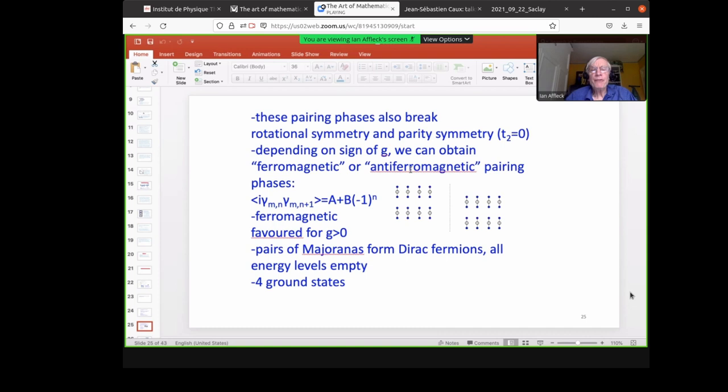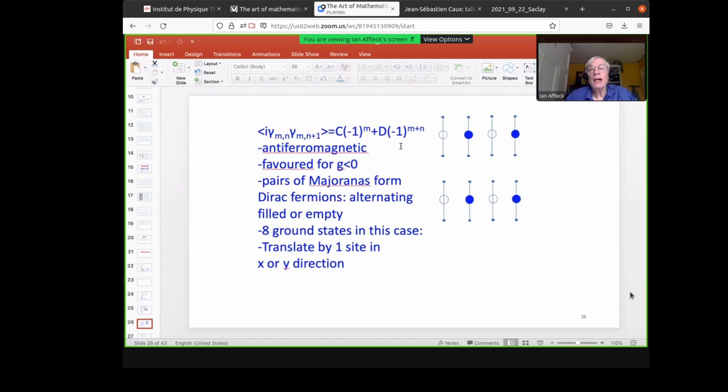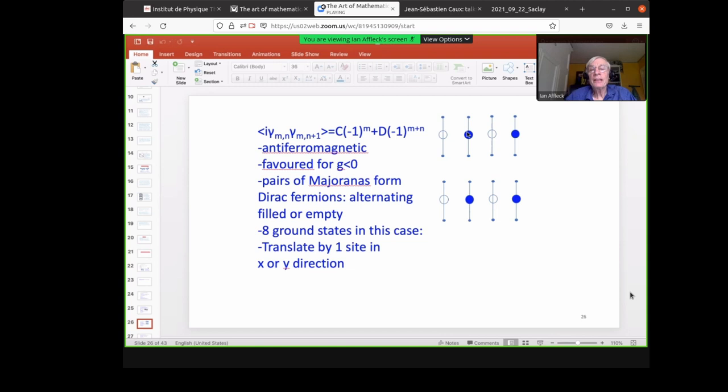So these pairing symmetries also break rotational symmetry and parity symmetry for T2 equals zero. And again, they depend on the sign of G. So we can obtain a mean field theory for positive G. So again, we combine Majoranas to form Dirac fermions. And again, these fermions are empty. So we can either do it forming vertical pairs or horizontal pairs. So altogether, we have four ground states for positive G. And for negative G, we actually get eight ground states, because we can pair up the Majoranas to form Dirac fermions two different ways. And we can either, again, we have empty field, empty field. So altogether, we have eight different states.